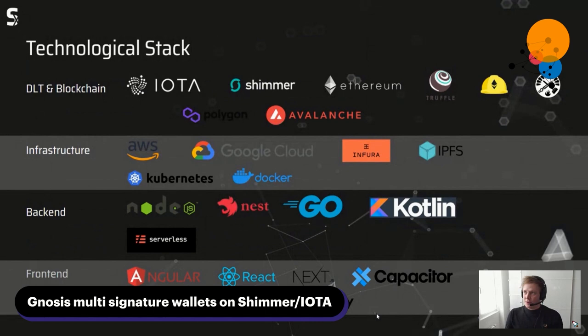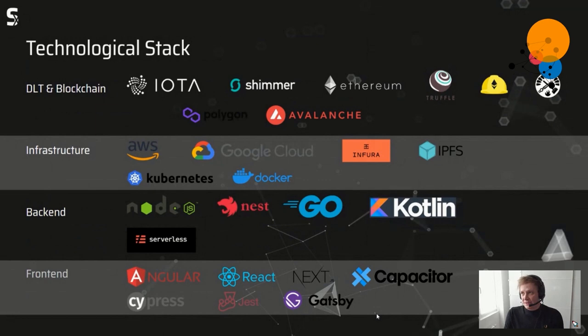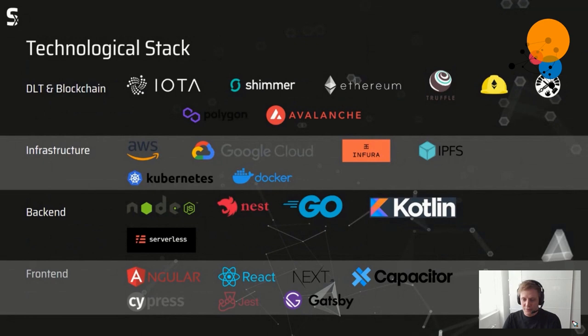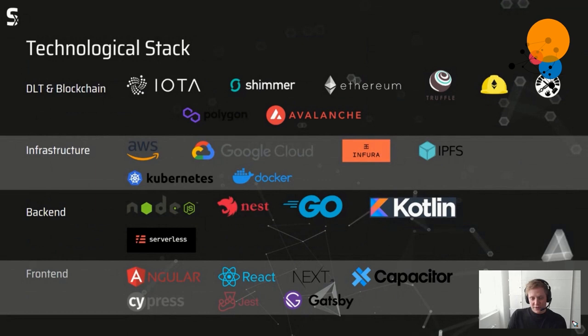We currently have some small projects on Polygon and Avalanche. We used Truffle to deploy our contracts, but recently switched to Hardhat and Foundry. For infrastructure we mainly use AWS and also Google Cloud Platform. On Ethereum we use an Infura node, and soon hopefully I can add the Spice5 logo as an infrastructure provider. We are also strongly building on Docker and Kubernetes.